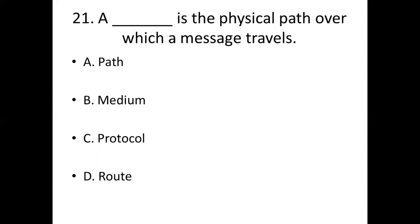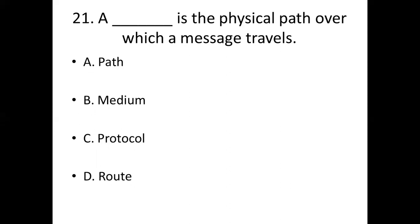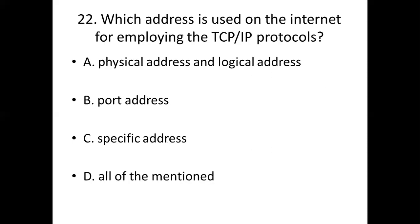Twenty-first bit: A dash is the physical path over which a message travels. Option A: Path. Option B: Medium. Option C: Protocol. Option D: Route. Answer: Option D — All of them mentioned.